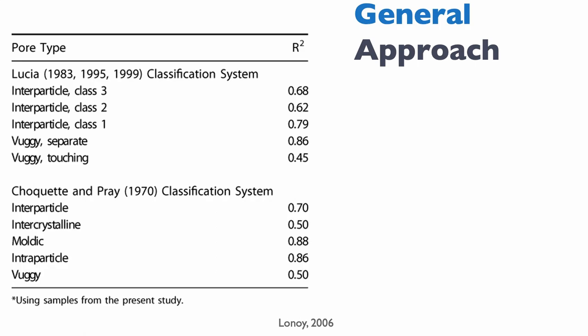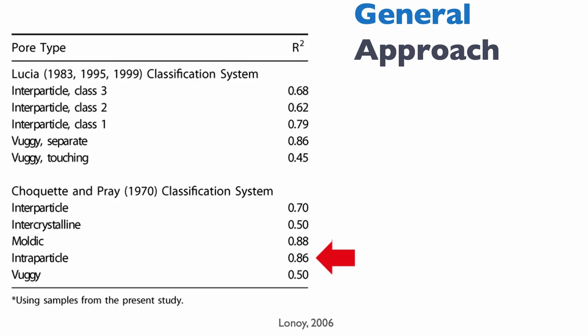Looking at the Choquette and Pray classification system, the situation is even worse. The predictivity for interparticle porosity is okay, but inter-crystal is pretty poor. Moldic and intra-particle porosity are also okay, since they are usually isolated and will have essentially no permeability — easy to predict. But the VOGS are very, very poorly represented in that classification.